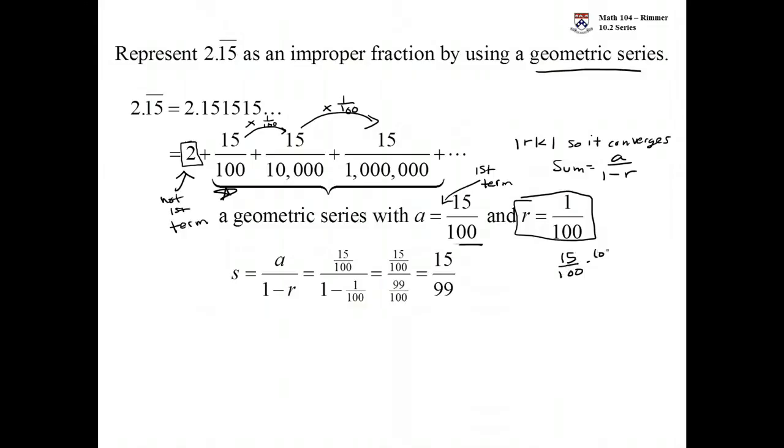Multiplying by the reciprocal, the hundreds cancel out. And so what we get is 15 over 99 and then that can be reduced by dividing by 3. So 5 over 33 is the representation of this infinite series of repeated numbers here as a fraction.